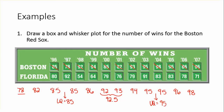The upper quartile is 95. We also have our minimum and maximum values — these are all the things we need for the box and whisker plot. Keep these numbers in mind as we make the box and whisker plot on the next slide.